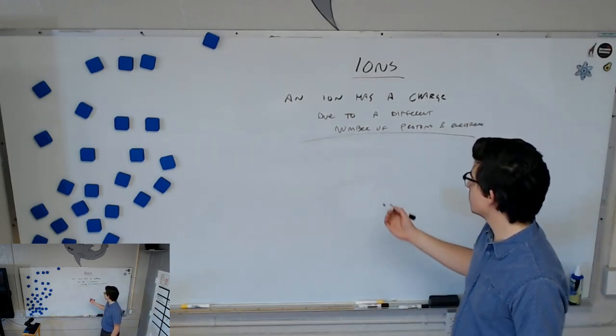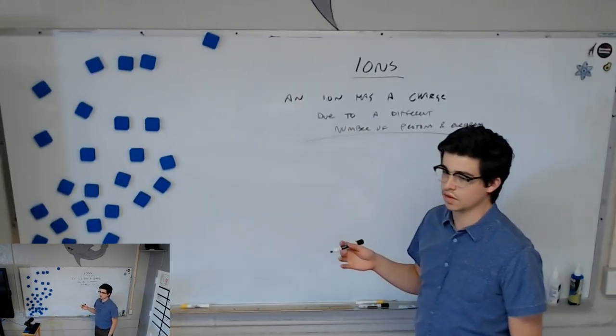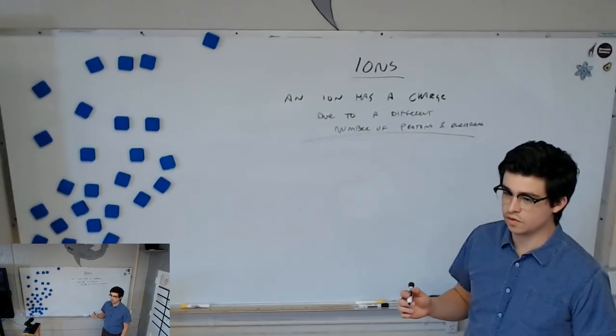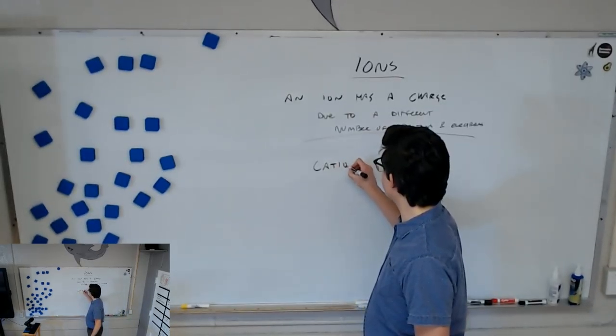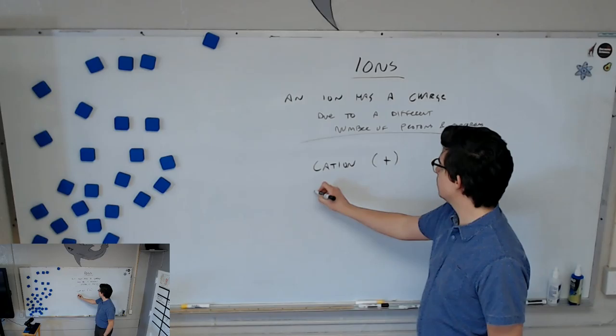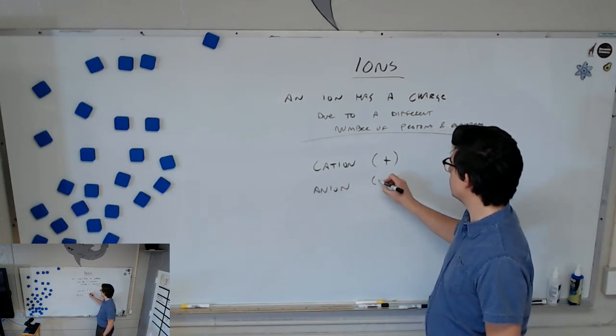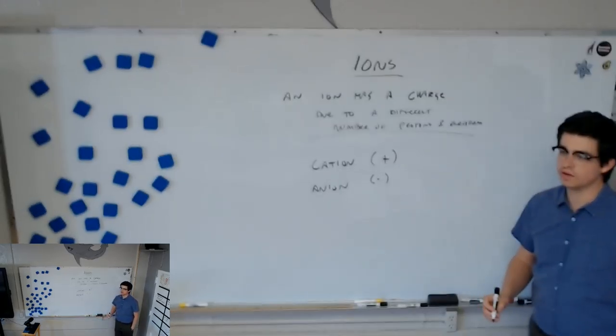So, ions can either be positive or negative, and we have different words for them, depending on whether they're positive or negative. Do you remember what the words are? What's in your vocabulary? A cation. Good. A cation, if it is what? If it's positive. Positive. And an anion. Do you remember the little mnemonic? Cats and onions. Yep.